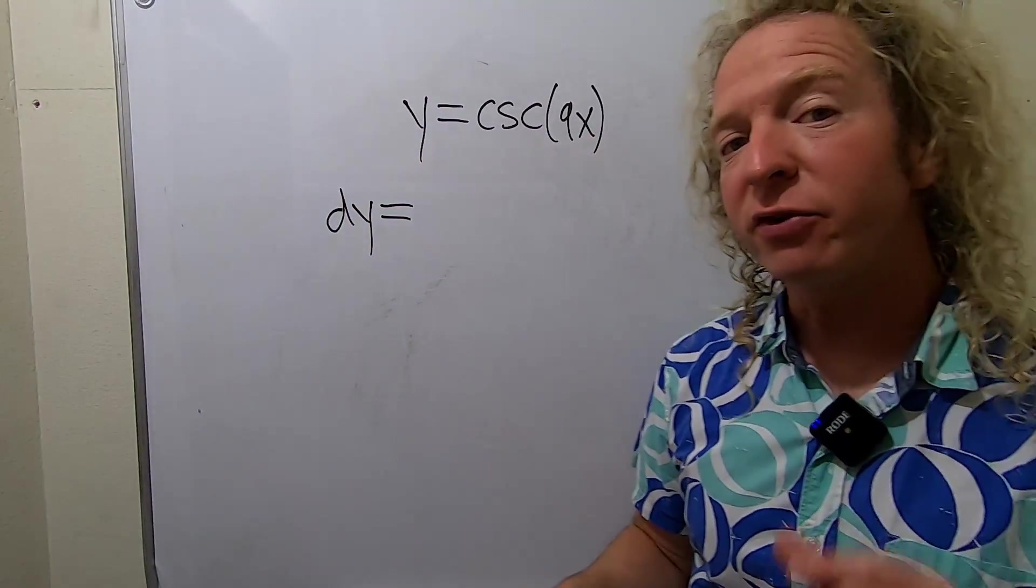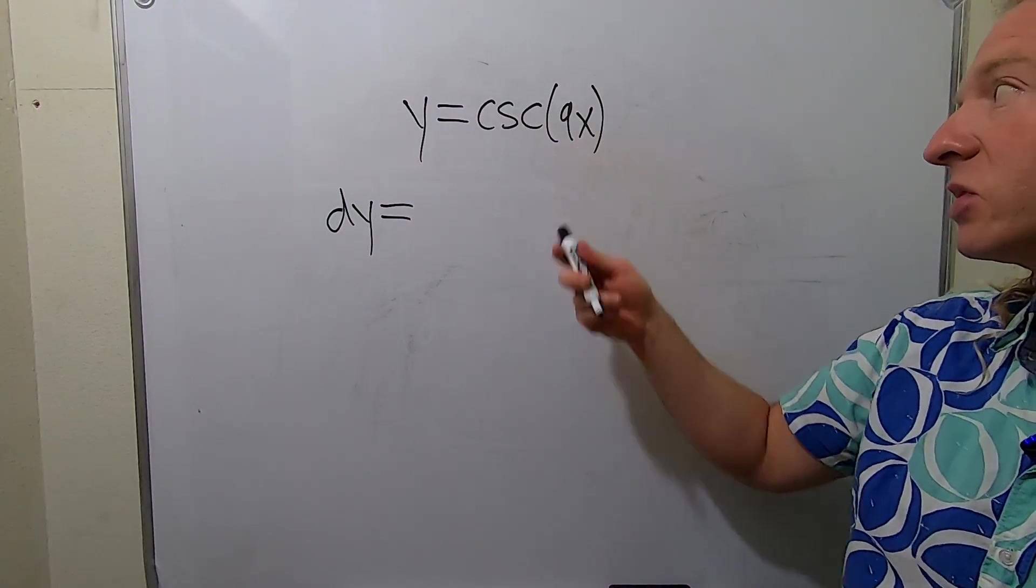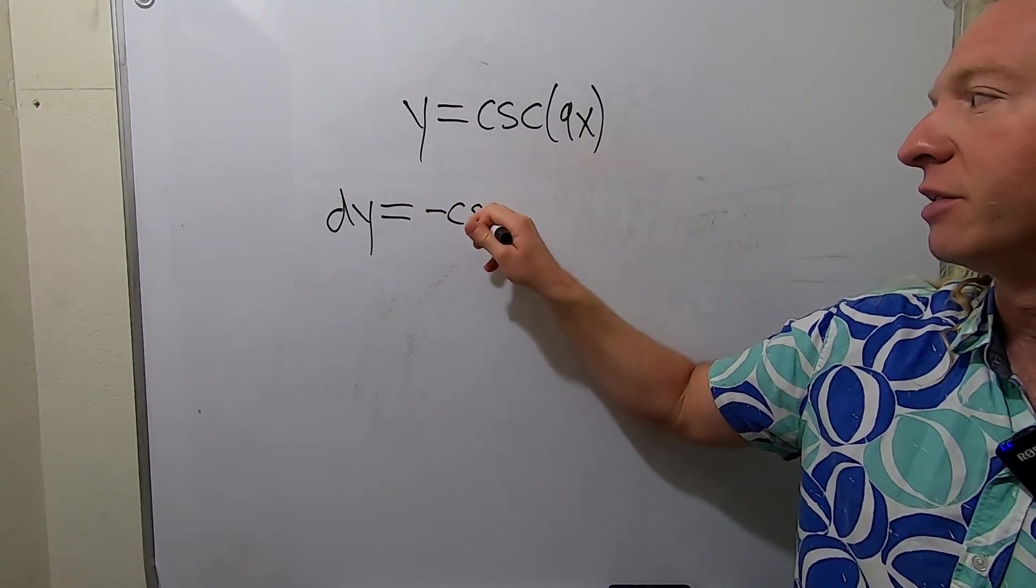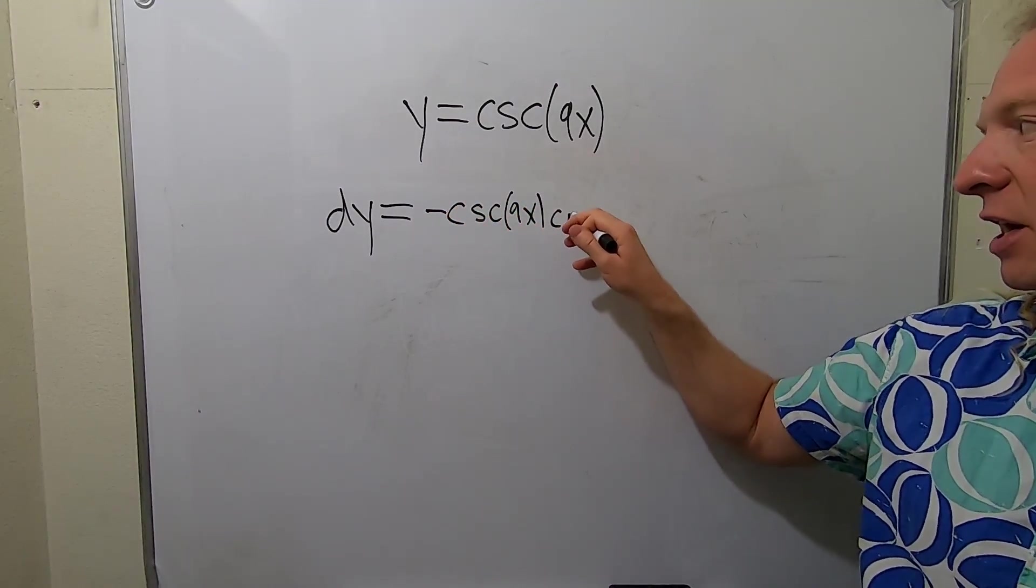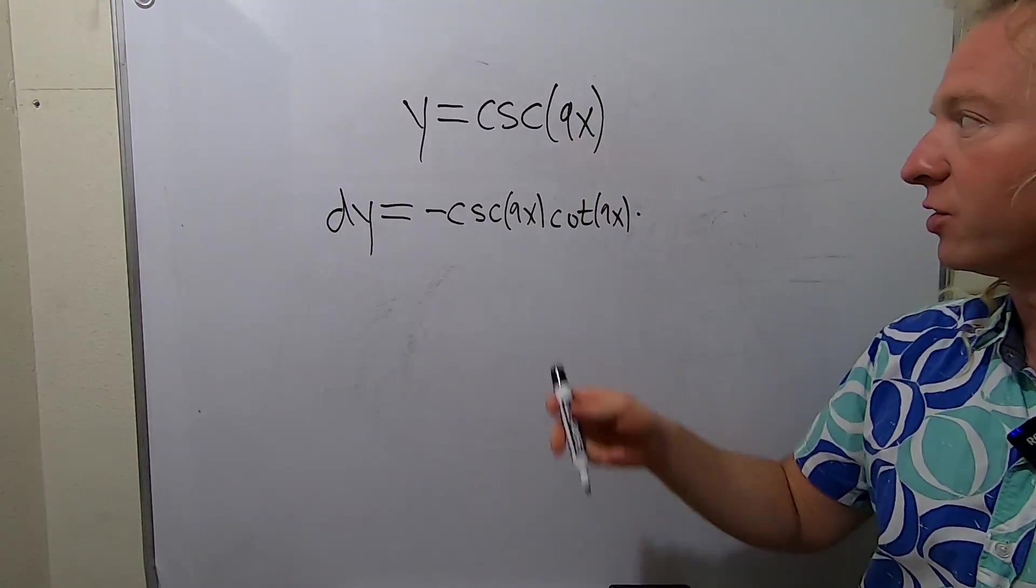The derivative of cosecant is negative cosecant cotangent, but here we have a 9x. So we have to use the chain rule, so it'll be negative cosecant of 9x cotangent of 9x times the derivative of the inside function.